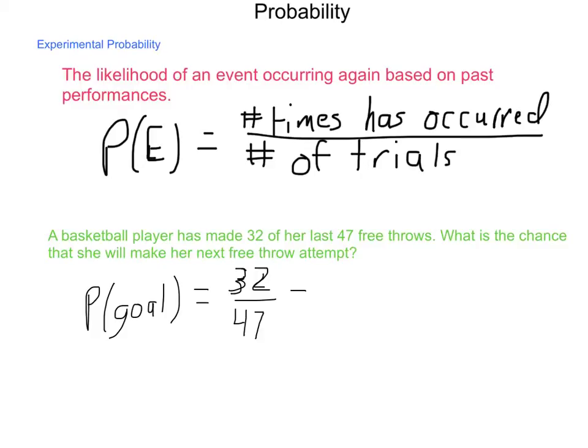If you go through and divide this out, rounding off to the nearest thousandth, we get 0.681. In other words, she has a 68.1% chance of making this next free throw.